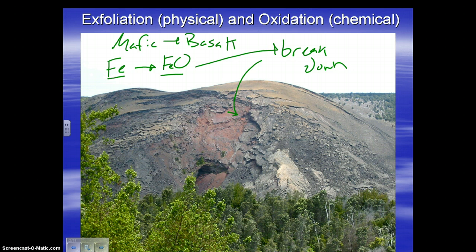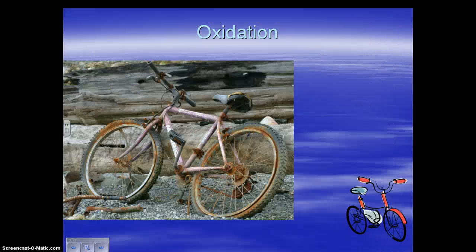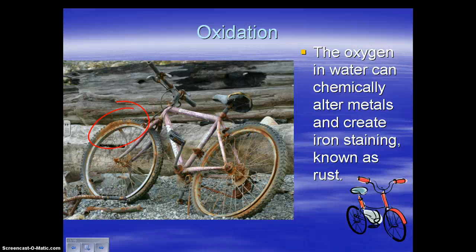What you're looking at in that image is actually two forms of weathering: regular exfoliation, which is physical — the rock doesn't change, it just breaks off — and oxidation, or rusting. Just like your bike might rust in the rain, we have iron staining here. Those red stains come from iron turning into iron oxide, and it breaks the rock down.